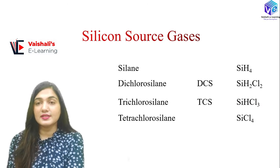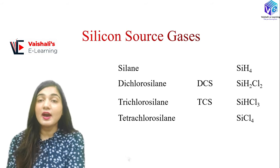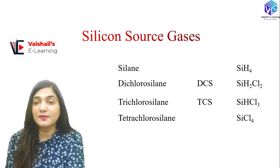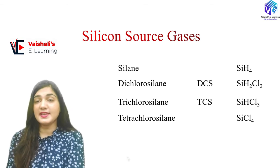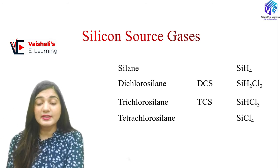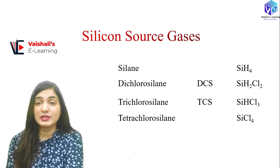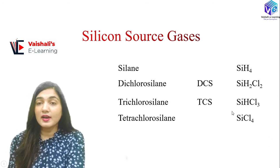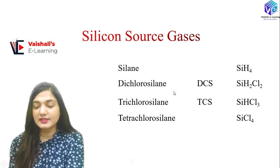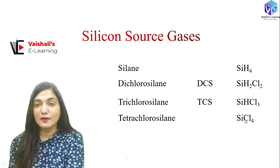Coming to silicon source gases — the gases from which silicon is extracted. Unlike EGS where we made solid silicon from sand, here silicon comes from source gases: silane (SiH₄), dichlorosilane (SiH₂Cl₂), trichlorosilane (SiHCl₃), and tetrachlorosilane (SiCl₄). The most popular is SiCl₄, which is used for most silicon epitaxial layer depositions.